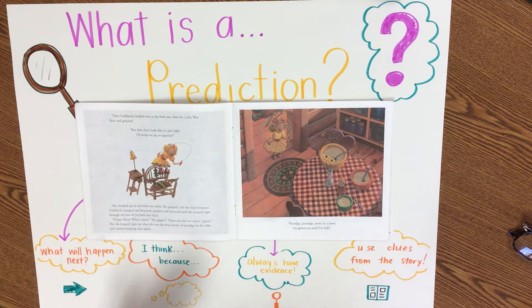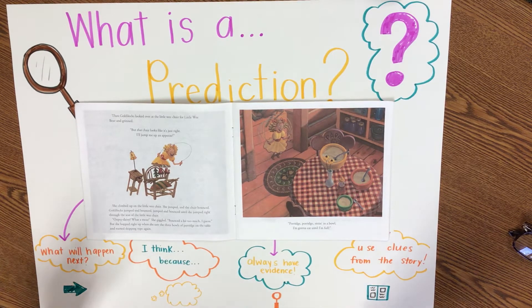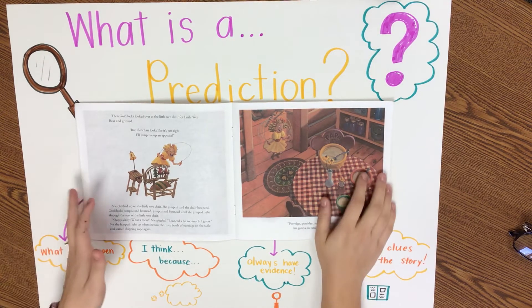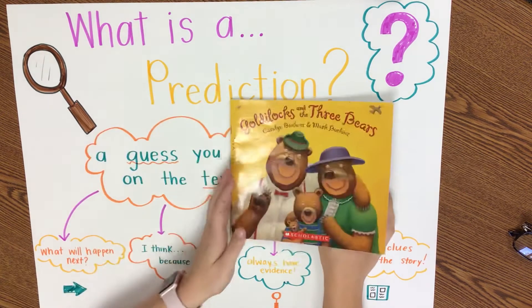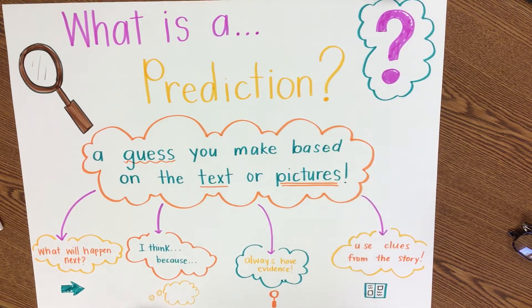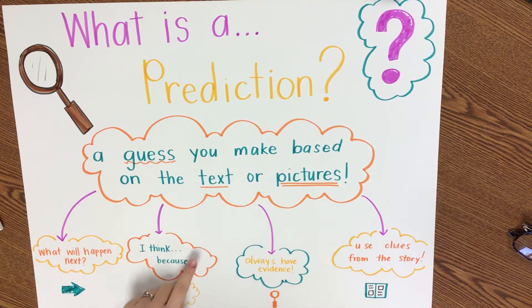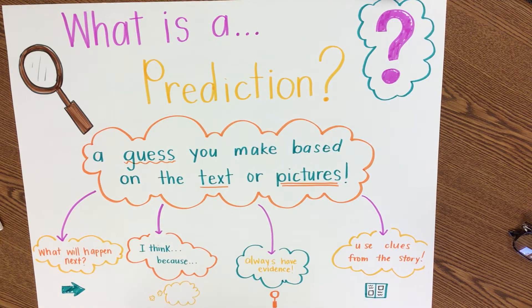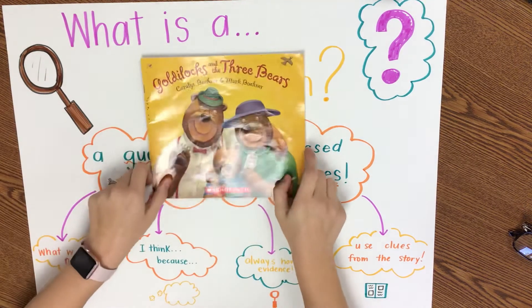Something that you can say when you are making a prediction is: 'I think... and because...' So when we look at the cover of this story — I know the glare makes it kind of hard to see — but looking at the cover of my book about Goldilocks and the Three Bears...